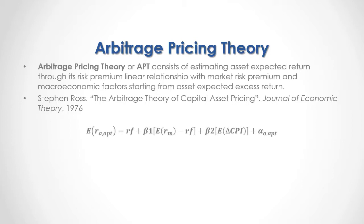As a formula, the expected asset return through the Arbitrage Pricing Theory is equal to a risk-free rate of return, plus a beta 1 coefficient multiplied by the market risk premium, which is the difference between the expected market return minus the risk-free rate of return, plus a beta 2 coefficient multiplied by the macroeconomic factor. This factor is included as an educational example and is not fixed — it can be modified according to your needs.